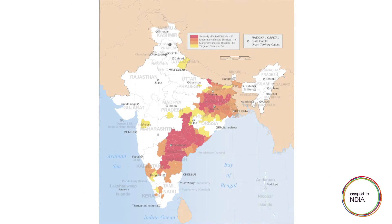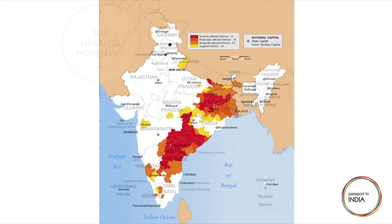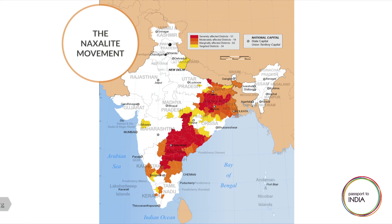The Communist Party of India (Maoist), for example, is a party with Naxalite origins that rejects constitutional democracy and seeks to violently overthrow the government. It is active in remote areas of central India, especially the heavily forested and mineral-rich states of Jharkhand, Chhattisgarh, the western parts of Odisha, and the northern parts of Andhra Pradesh.